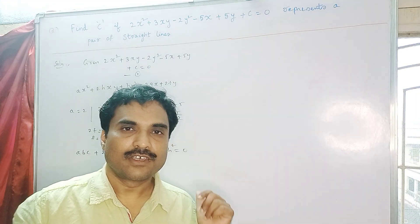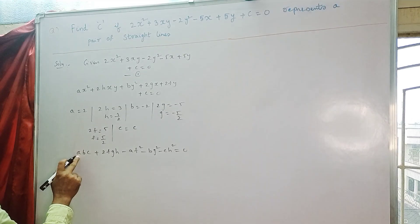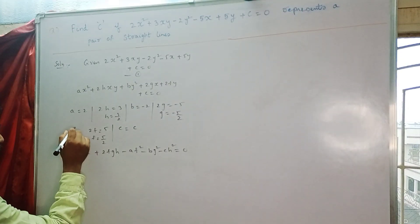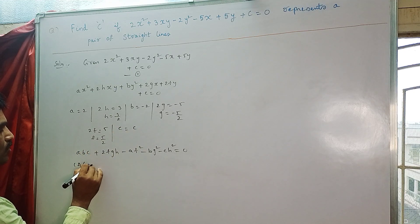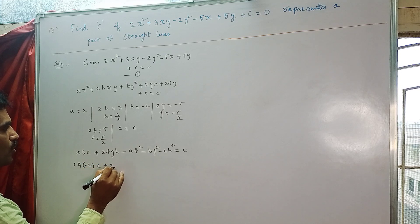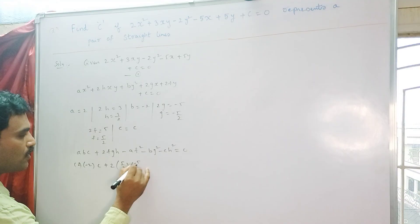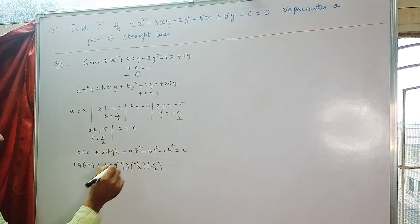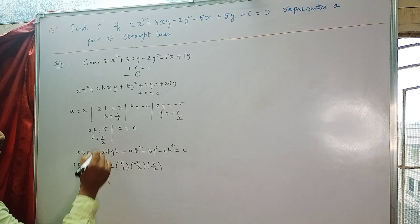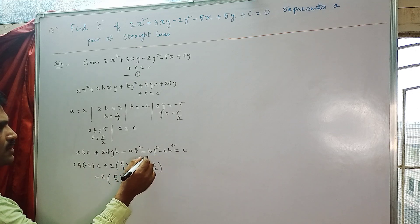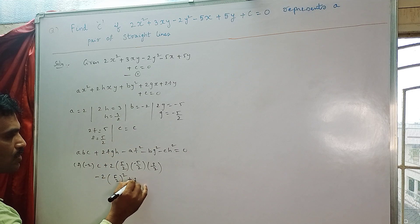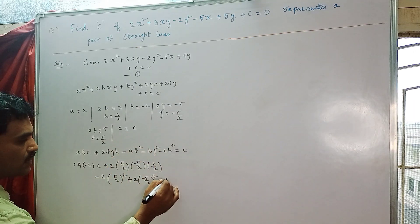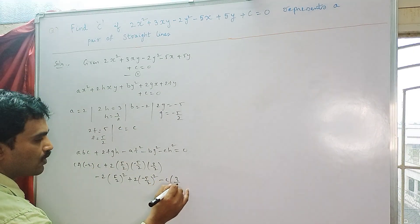Since equation 1 represents a pair of straight lines, this condition is satisfied. We substitute the values: a = 2, b = -2, c = c, f = 5/2, g = -5/2, h = 3/2. So: (2)(-2)(c) + 2(5/2)(-5/2)(3/2) - 2(5/2)² - (-2)(-5/2)² - c(3/2)² = 0.